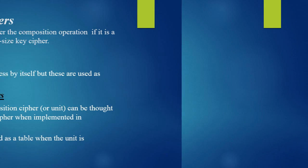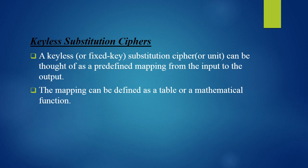A keyless or fixed-key substitution cipher can be thought of as a pre-defined mapping from input to output. That is, we know that the first bit if 1 will be mapped to 0, the second bit if 0 will be mapped to 1, and so on. The mapping can be defined as a table or a mathematical function.